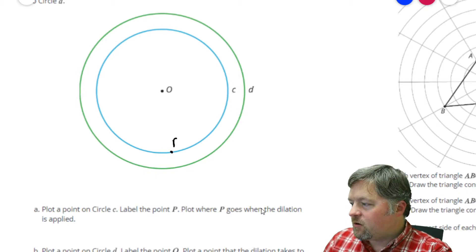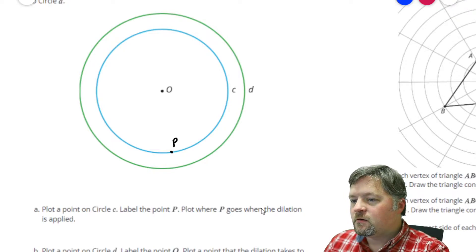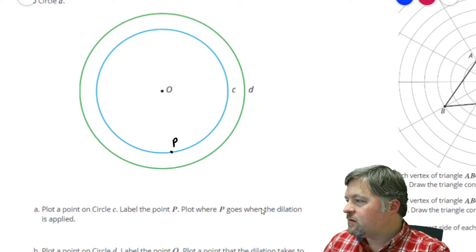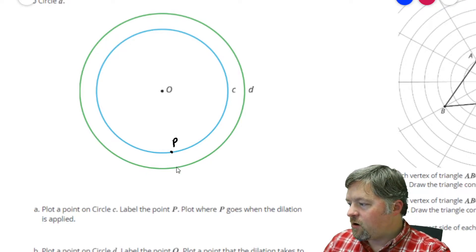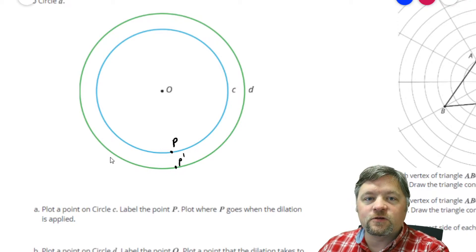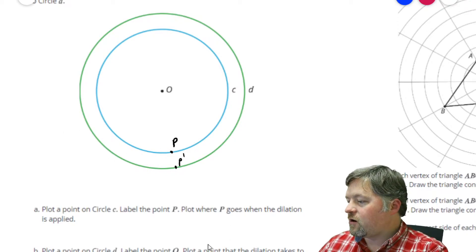So that's a point, your point can be anywhere. If that is P, when the dilation is applied, P prime has to follow this line. So P prime would be here. Because we follow the line through the center of dilation through our point.